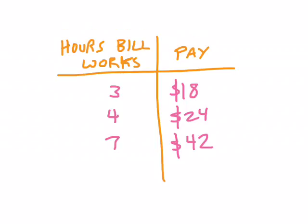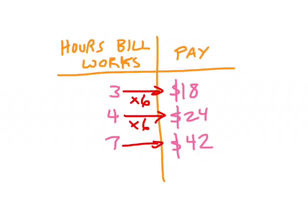The thing we need to be looking for is basically what's the pattern. If you can identify the pattern, you can write it as a variable expression. Based on what I know about how pay works, maybe Bill is making an hourly rate, so three becomes 18. What times three makes 18? Three times six makes 18. Does four times six make 24? It does. Does seven times six make 42? It does. If the rule I've thought of explains all of the information I have, I can be very confident that this is the correct rule.